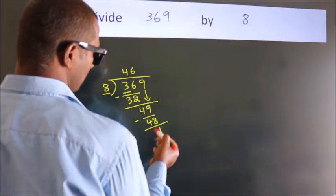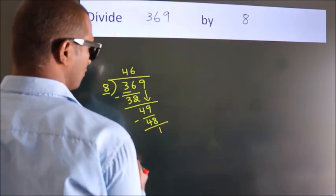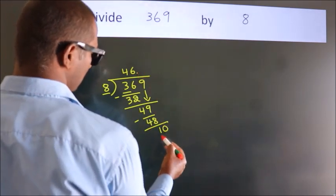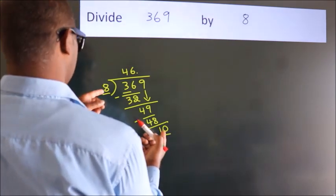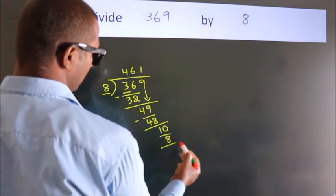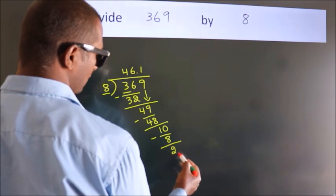After this, no more numbers to bring down. So what we do is put a dot, take 0. So 10. A number close to 10 in the 8 table is 8 once 8. Now we subtract. We get 2.